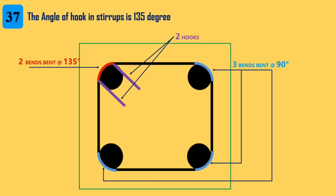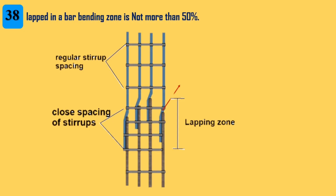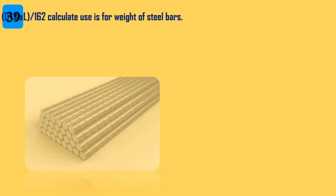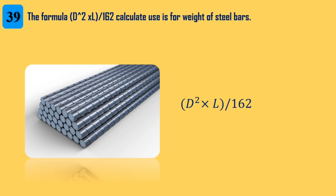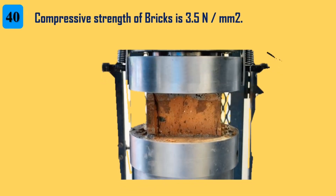37. The angle of hook in stirrups is 135 degrees. 38. Lapping in a bar bending zone is not more than 50%. 39. The formula d² × L ÷ 162 is used to calculate the weight of steel bars. 40. The compressive strength of bricks is 3.5 N/mm².